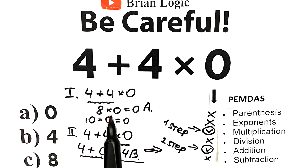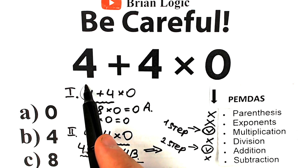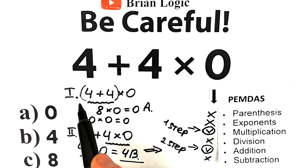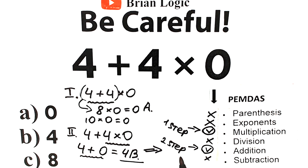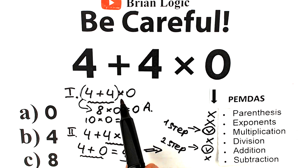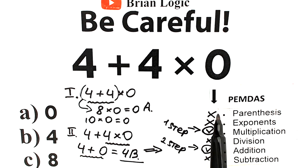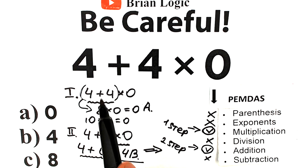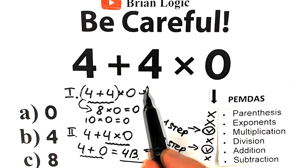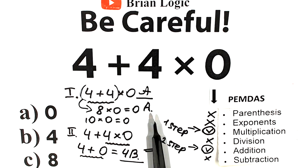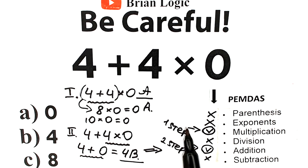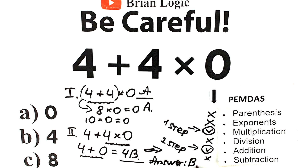There is one interesting point: I wrote the first interpretation to show that with parentheses this expression would change. With parentheses — (4 plus 4) times 0 — we get 4 plus 4 equals 8, then multiplication by 0, so 0 would be correct with parentheses. But in our case we don't have parentheses, so the correct answer is Option B — our answer is 4.